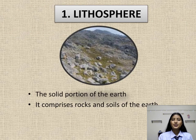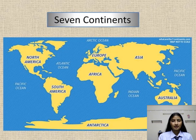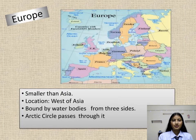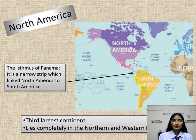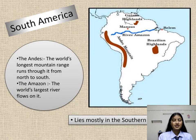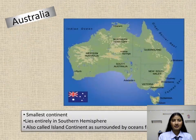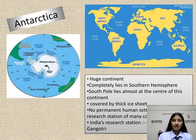The lithosphere is divided into seven continents: Asia, Europe, Africa, North America, South America, Australia, and Antarctica.